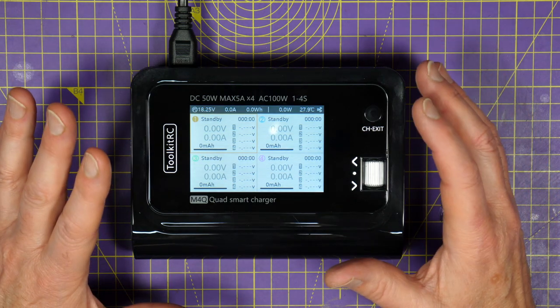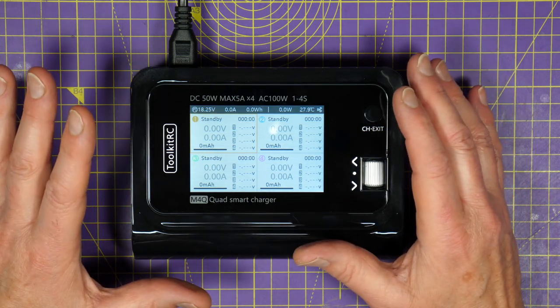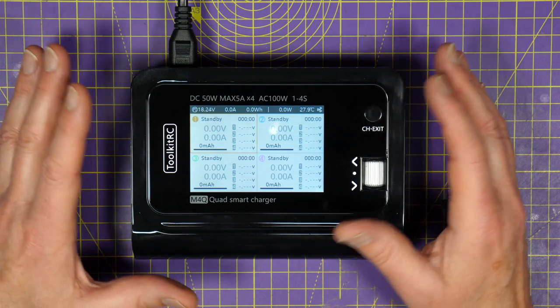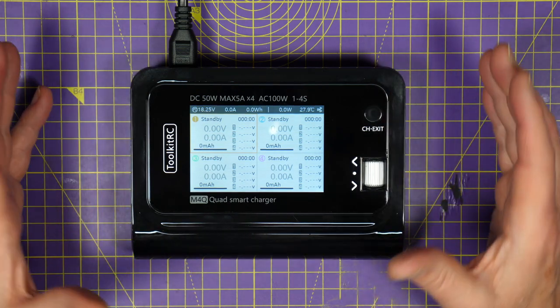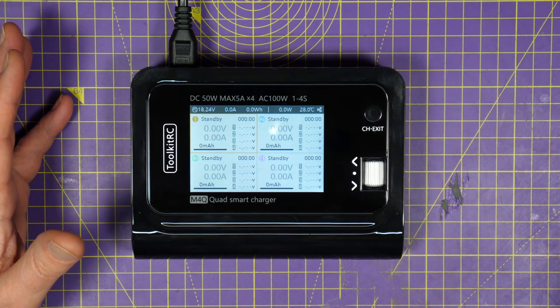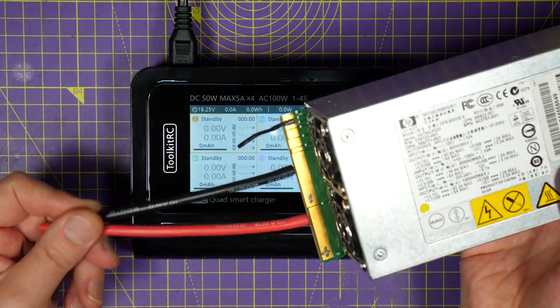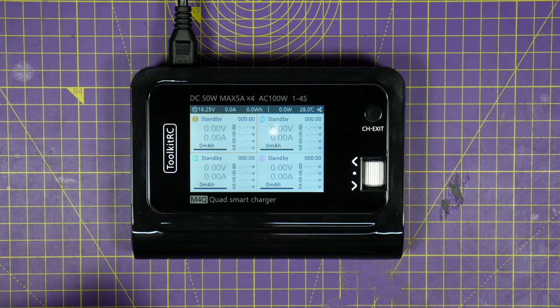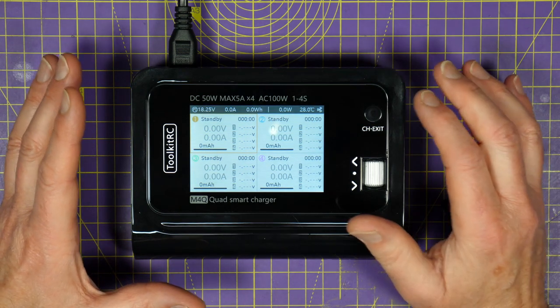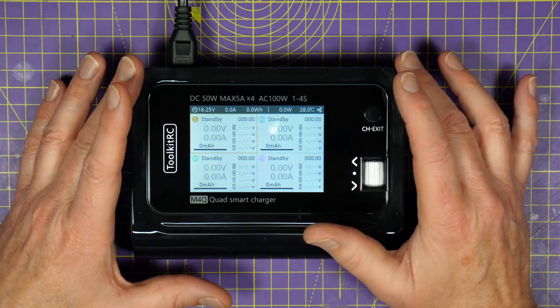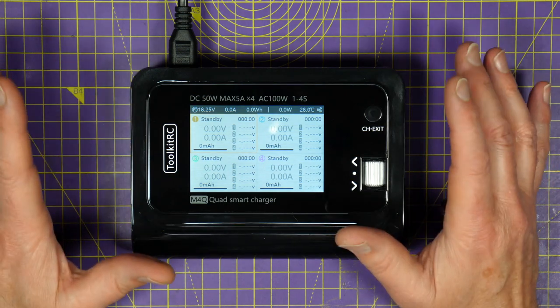Most chargers these days require some sort of external DC power source. That could be another battery when you're out in the field or a suitable DC power supply, something like this, that you plug into the mains outlet when you're at home. So this, just like the M4AC, is very convenient to use because you can just plug it in a wall socket.